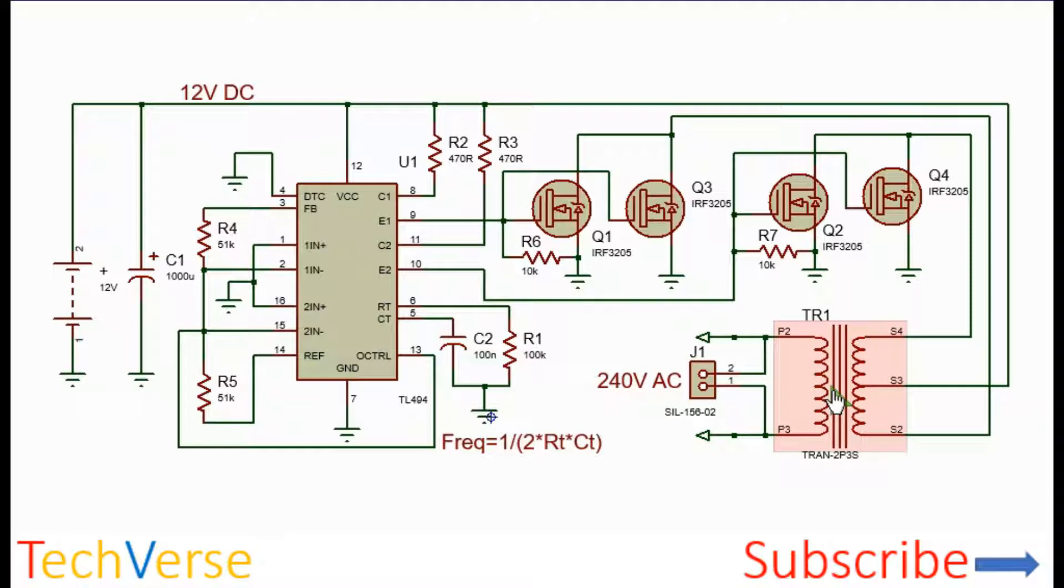So the transformer you can use one from an old microwave or welding machine since they have the current capacity to handle more than 500 watts or even a thousand watts. Just modify and make your own primary windings until you get the desired output voltage.